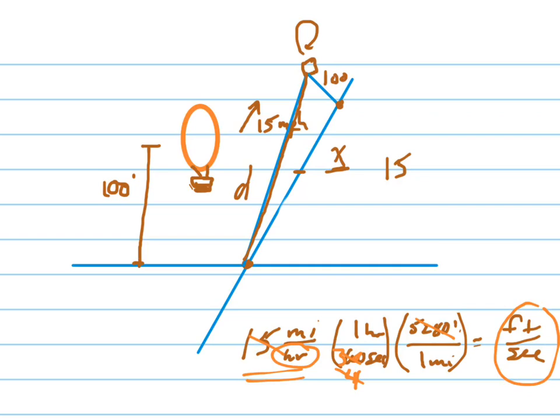All right, so the way to solve this is to multiply 15 times 5,280, because there's that many feet in a mile, and divide it by 3,600, because that's how many seconds there are in an hour. And then you get 220 feet per second.